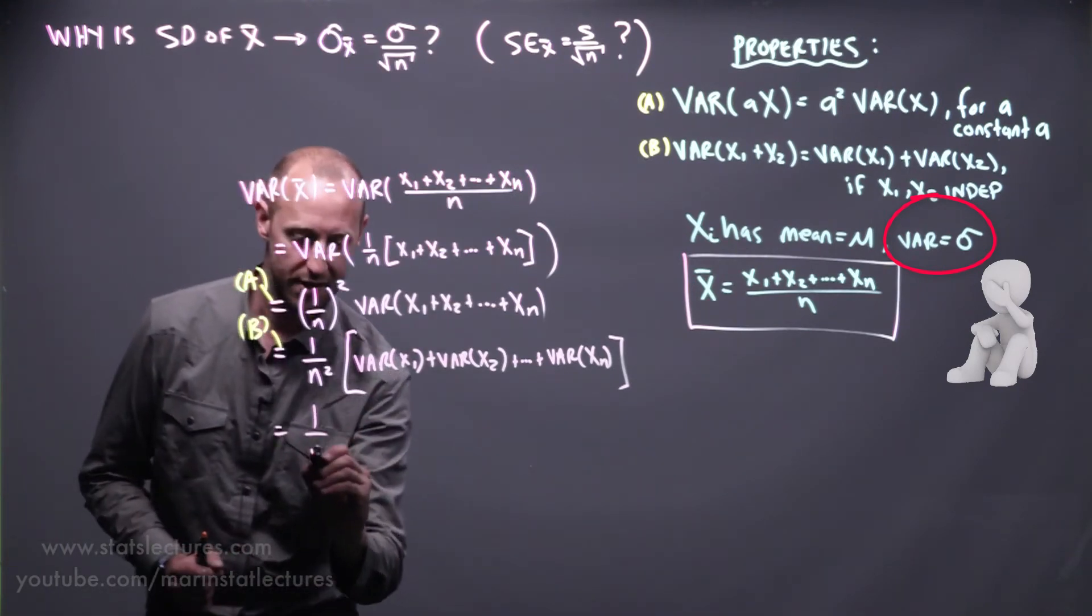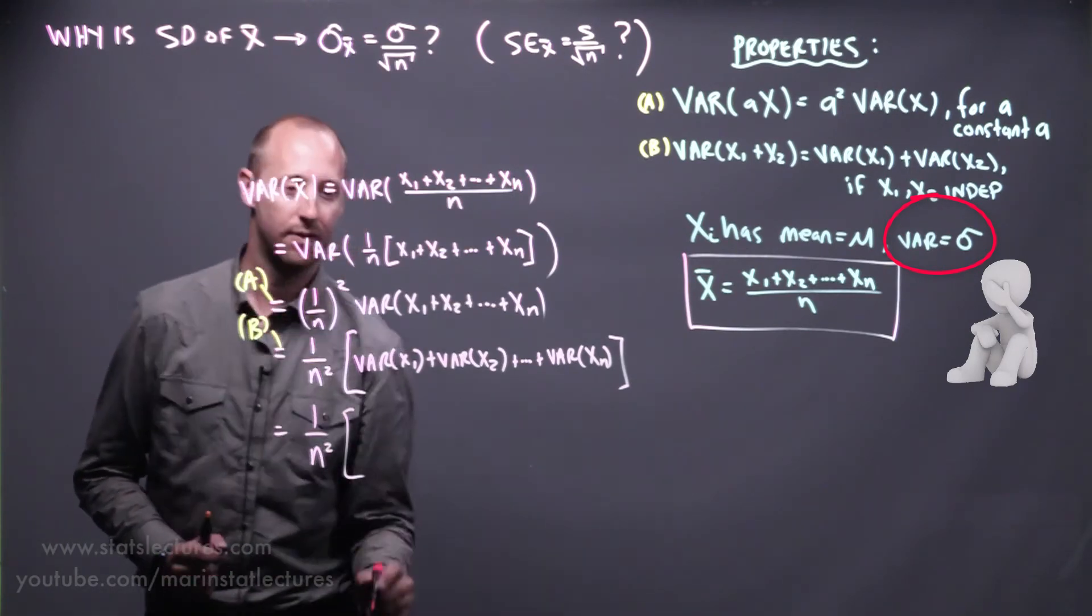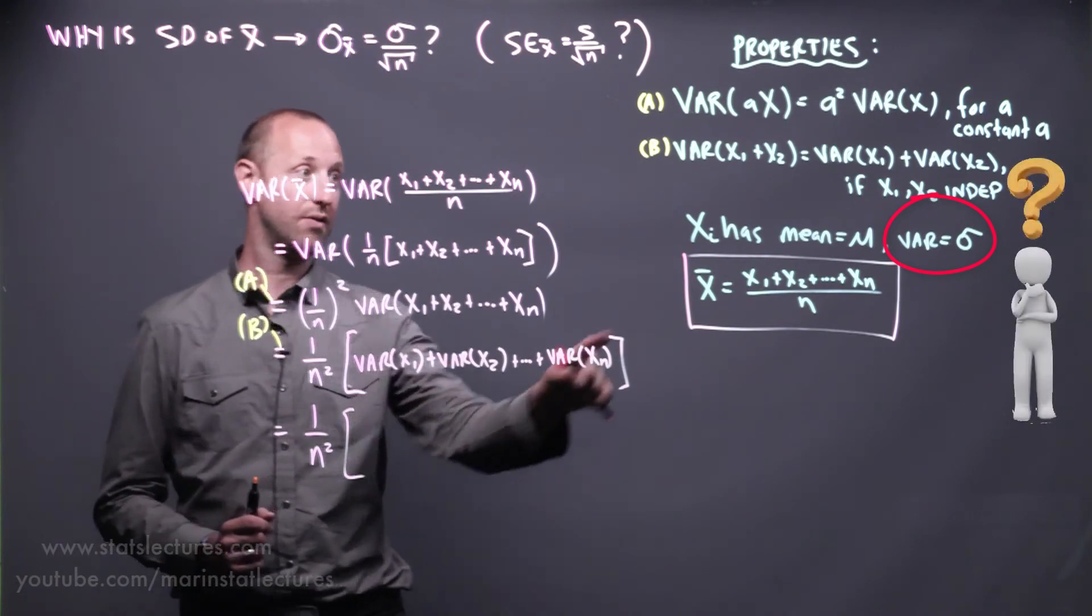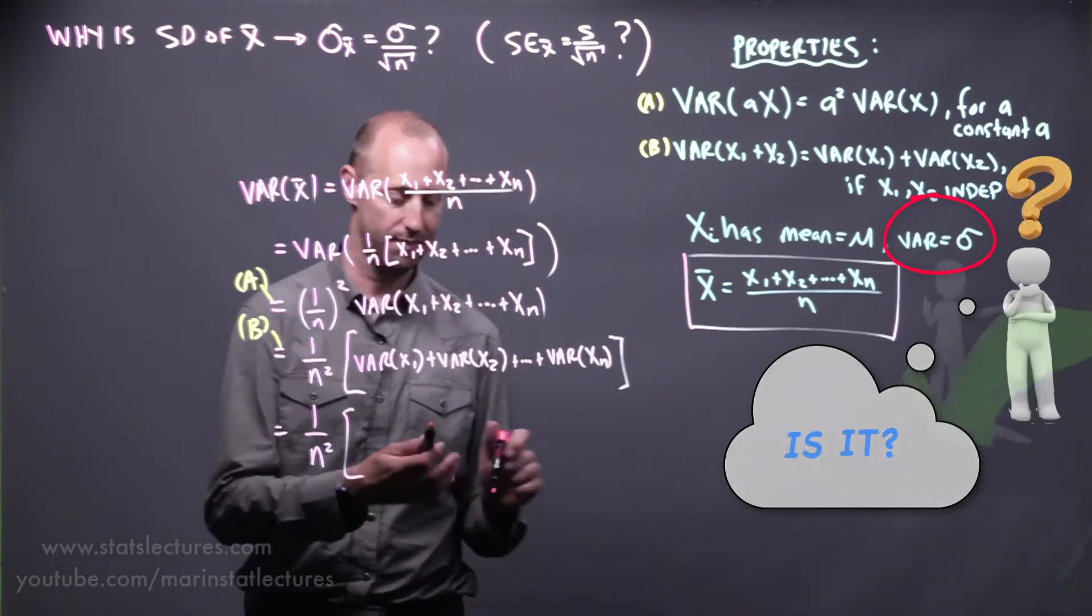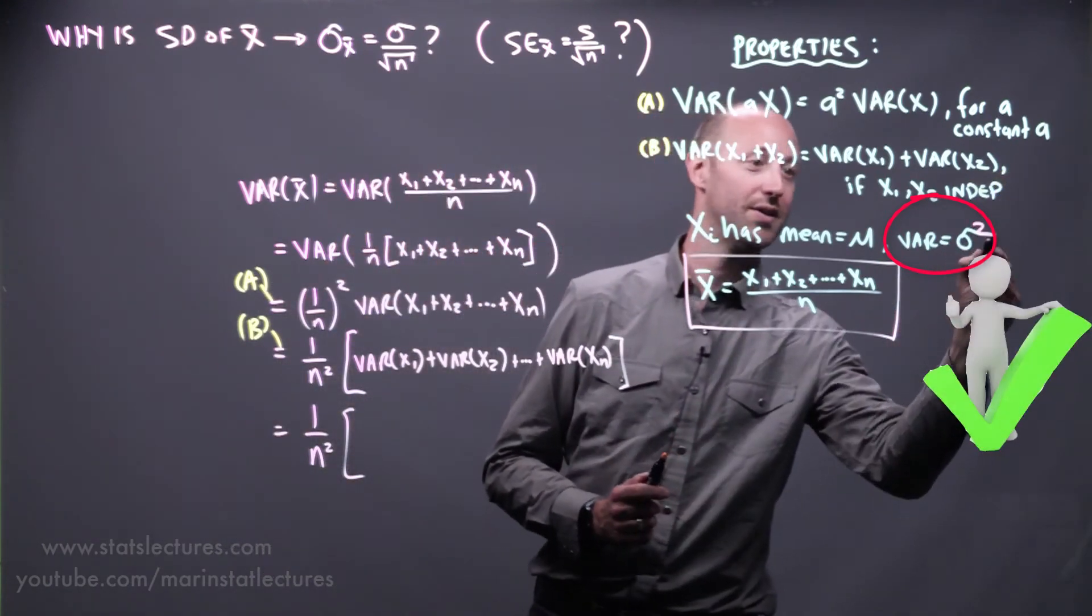And now, let me add this here. We notice the variance of x1, the variance of each of these observations is sigma squared. Sigma we use to represent standard deviation, sigma squared for variance.